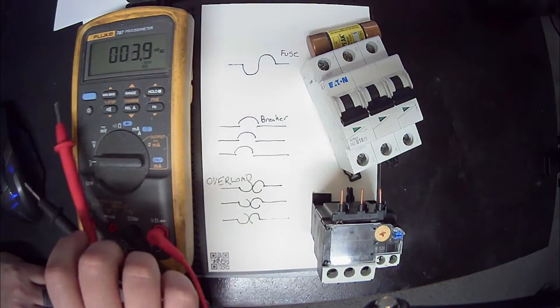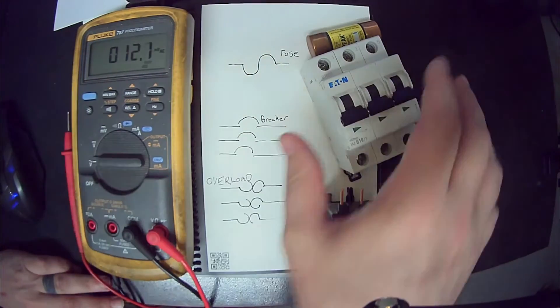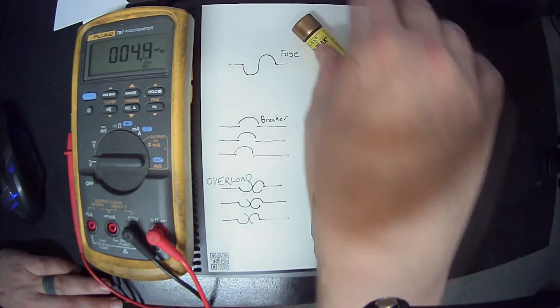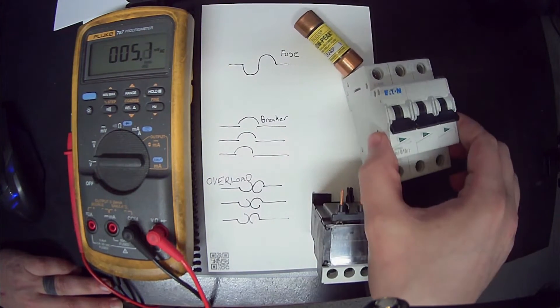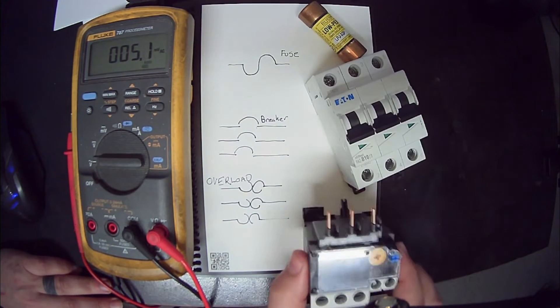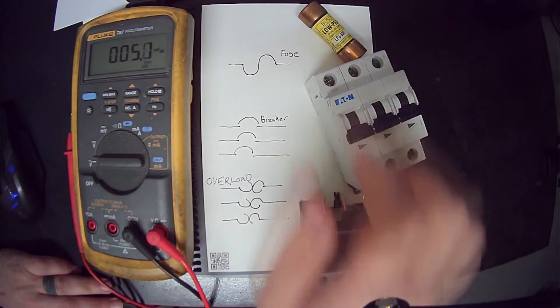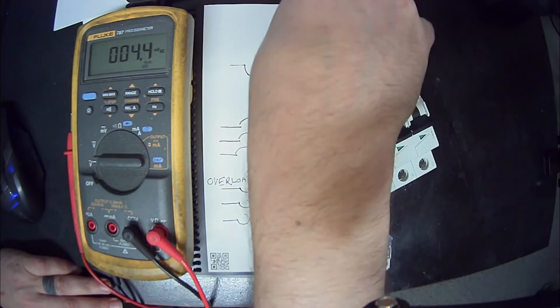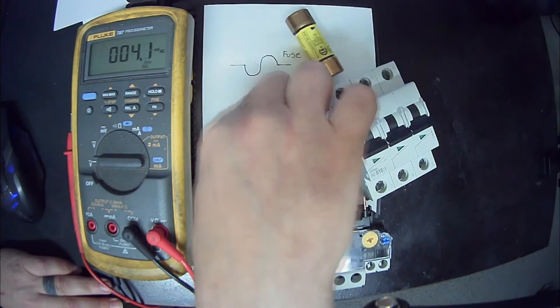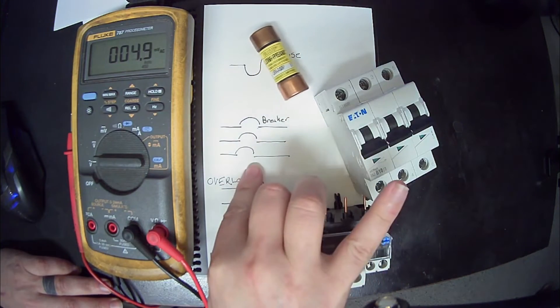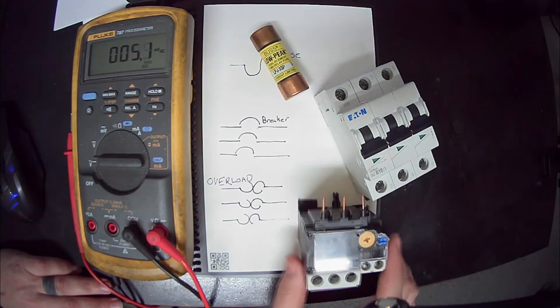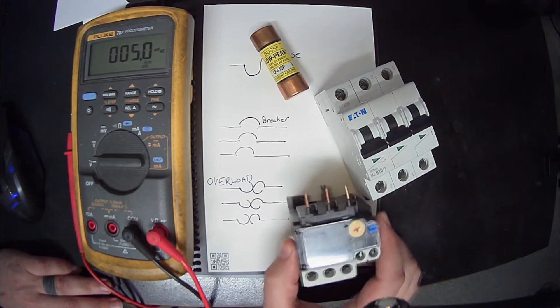As you can see, we've got our multimeter set up right here. We've got our fuse - I think we all recognize that they come in all different shapes and sizes. We got ourselves a breaker, we've got ourselves our overloads, and ANSI symbols: fuse, breaker, three pole breaker, and three pole overload. That's a motor overload.